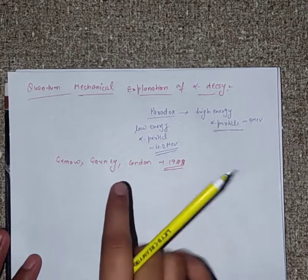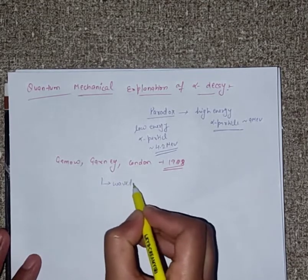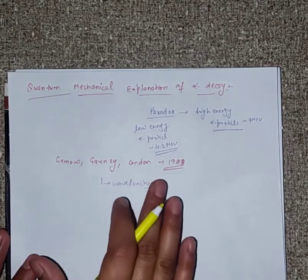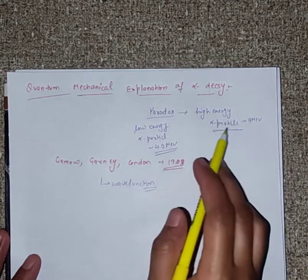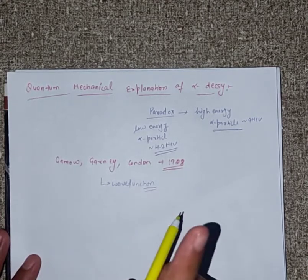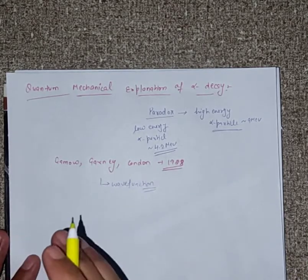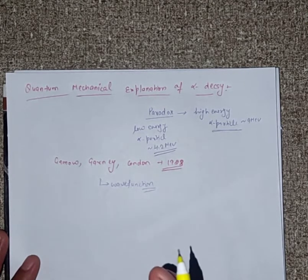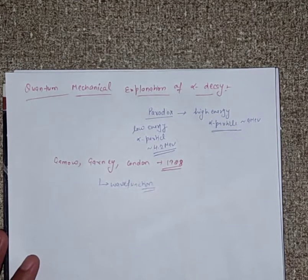In quantum mechanics, we use a wave function to determine the probability. If we use a particle — an alpha particle — and we want to find the probability, we use a wave function. This means in quantum mechanics there is a possibility that the alpha particle leaks through the barrier, and it is a finite probability.